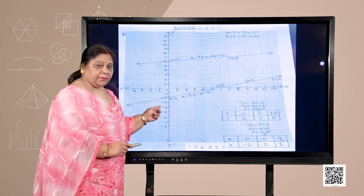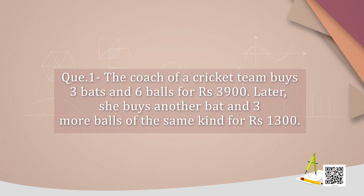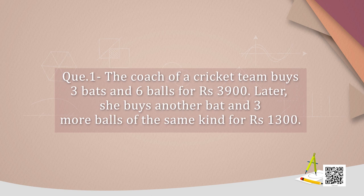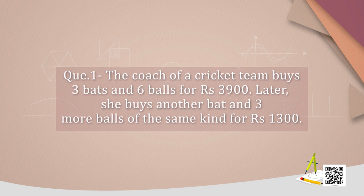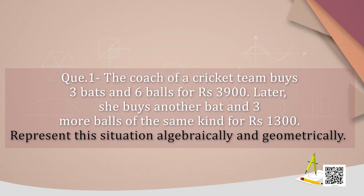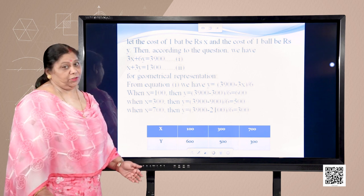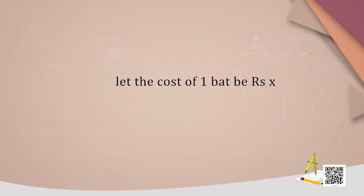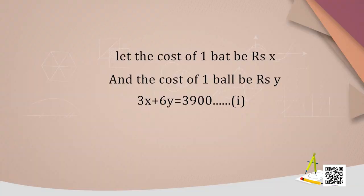Let us go to the next question. The coach of a cricket team buys 3 bats and 6 balls for rupees 3900. Later, she buys another bat and 3 more balls of the same kind for rupees 1300. Represent this situation algebraically and geometrically. Let the cost of one bat be rupees X and the cost of one ball be rupees Y. Then: 3X + 6Y = 3900 and X + 3Y = 1300.